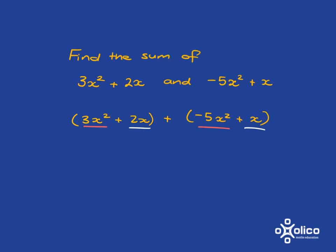So 3x², add onto it -5x², is going to give you 3x² - 5x², which is just going to be -2x². And then you're going to have 2x and you're going to add to it x, and so you will get 3x.